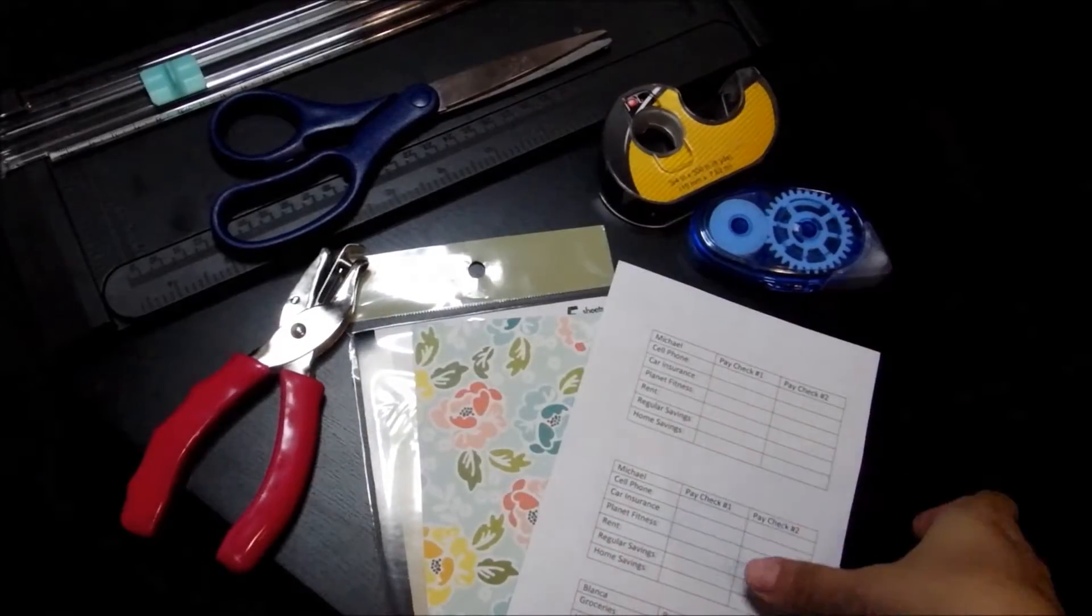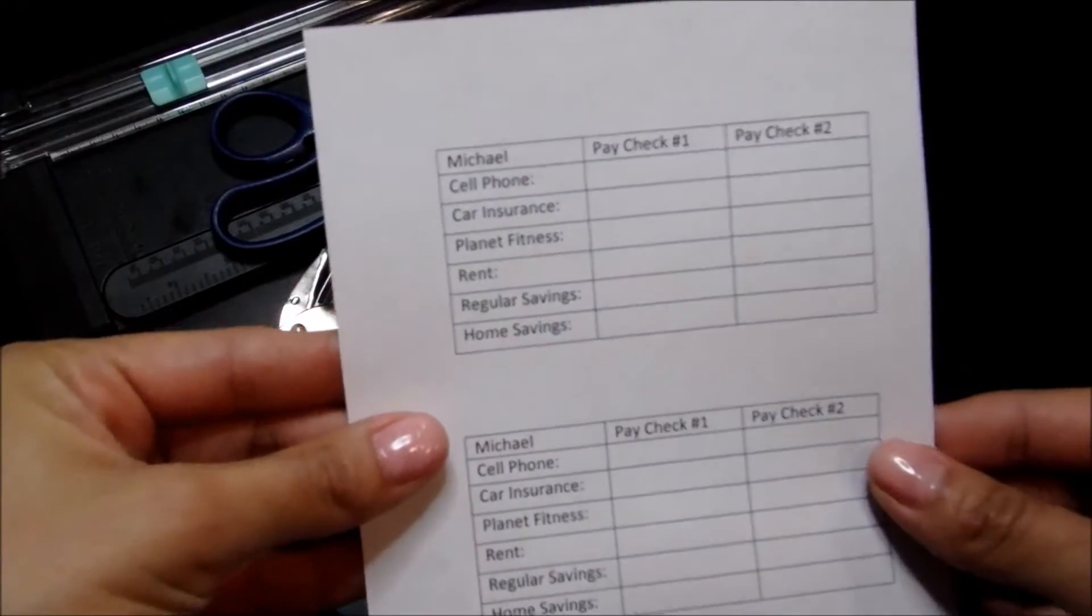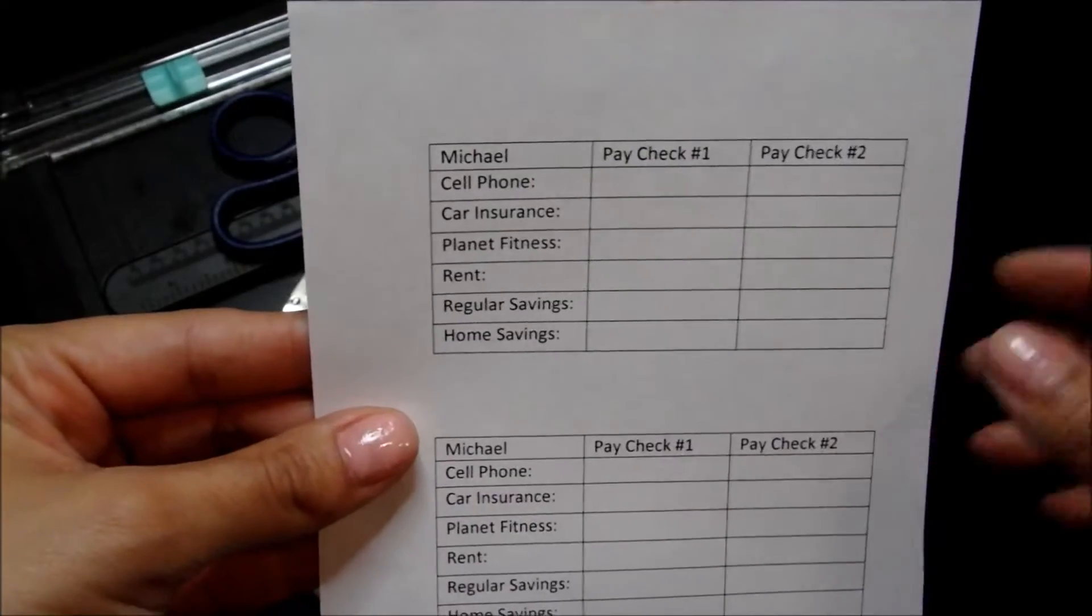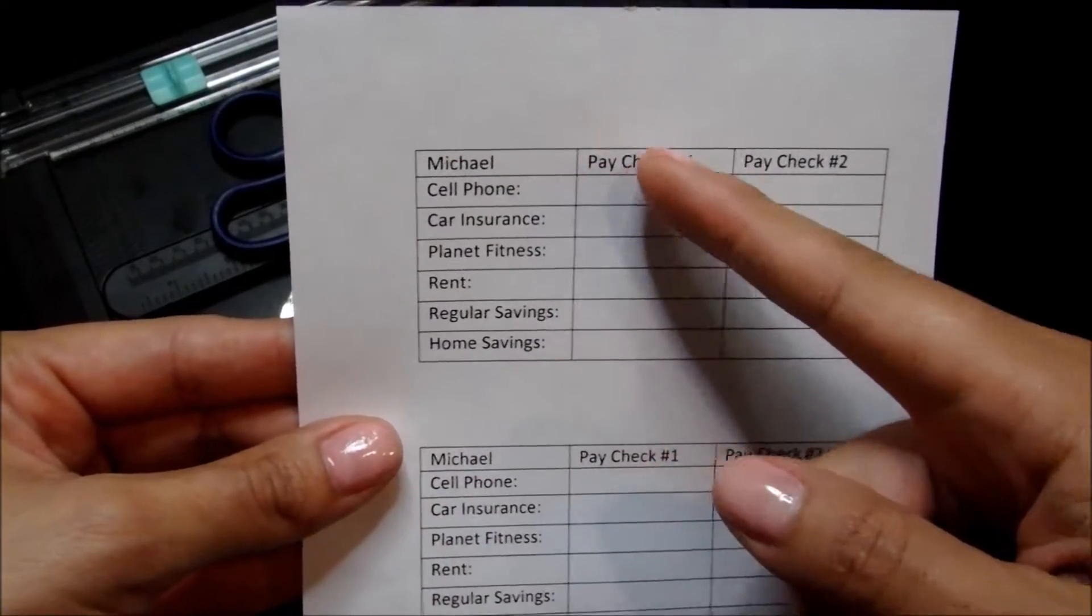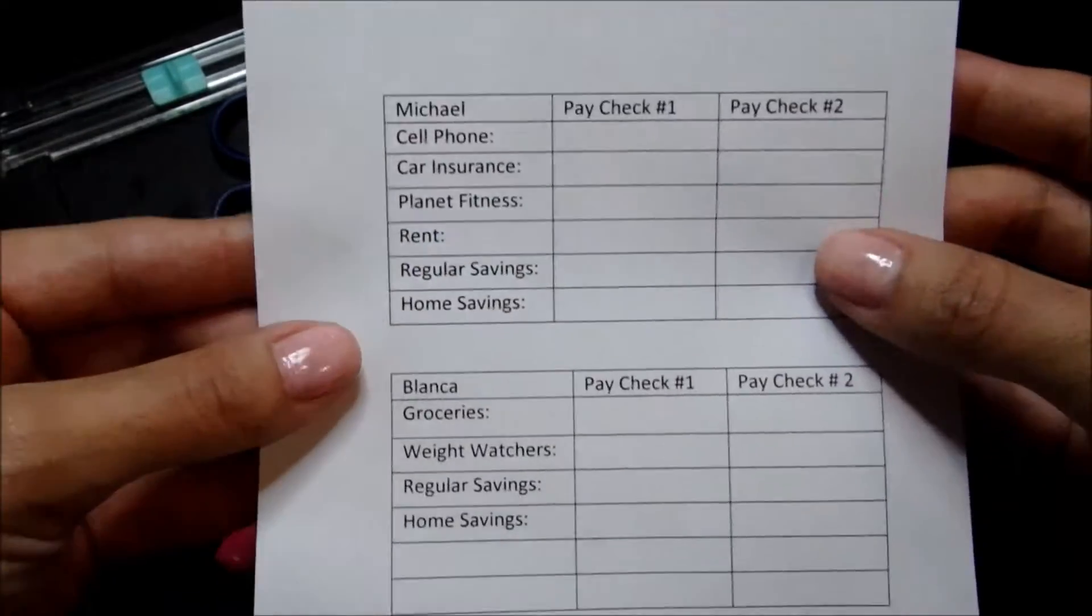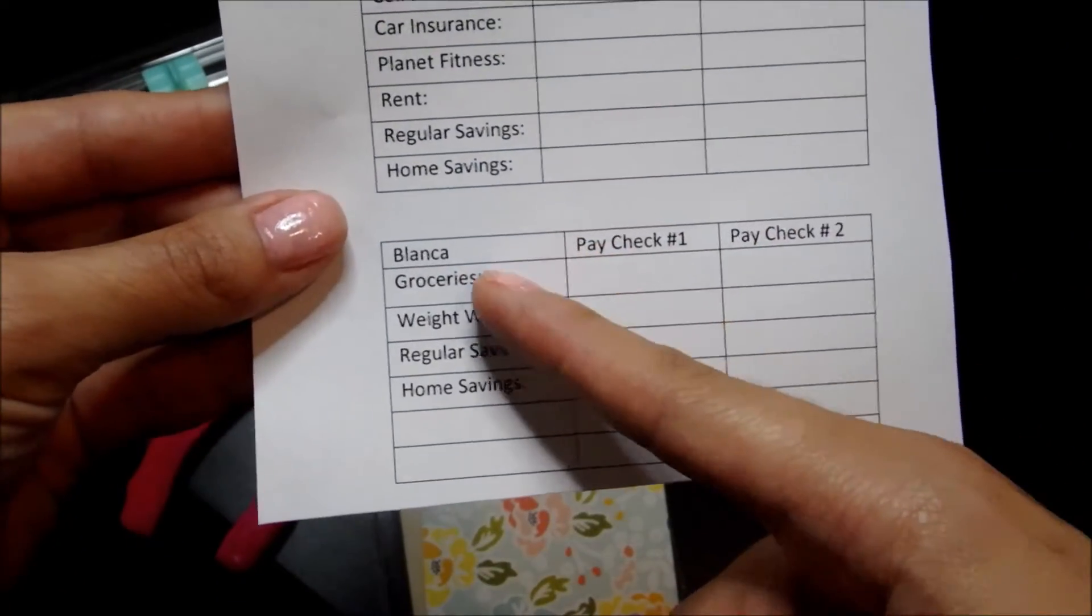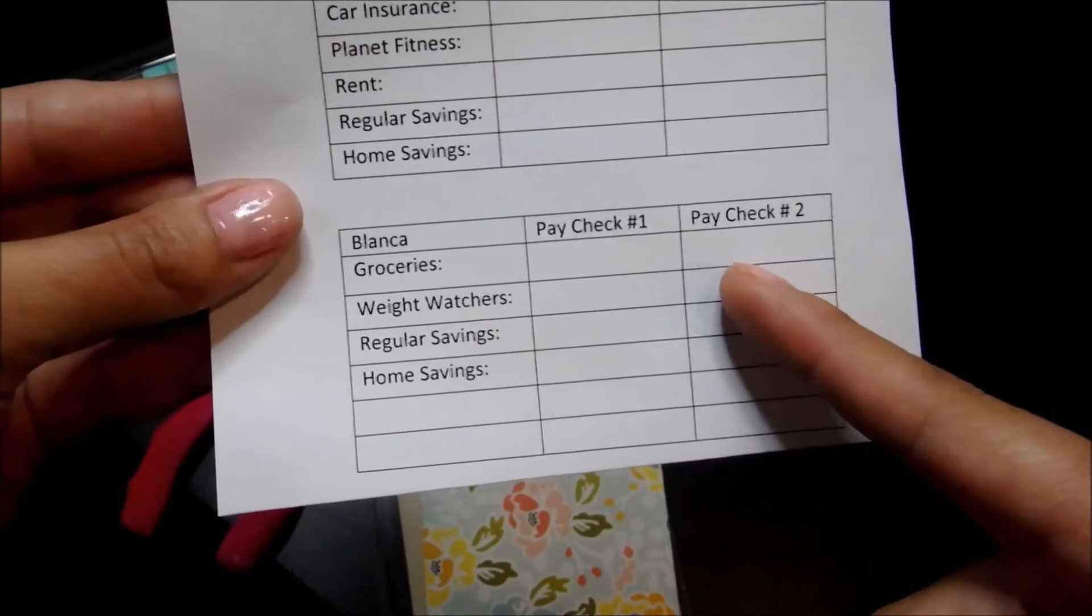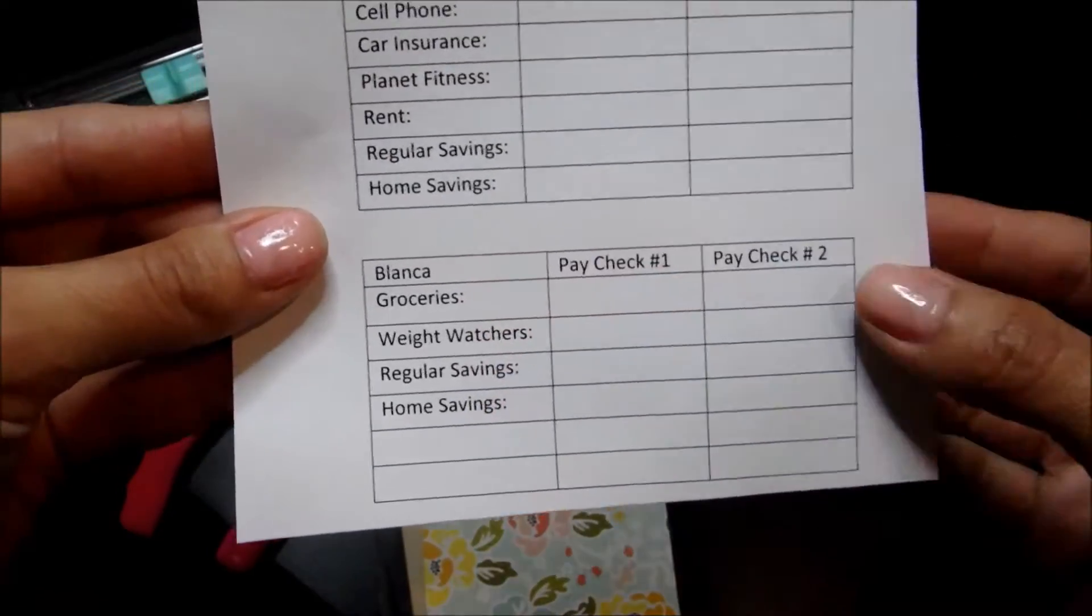Here are the materials you will need. First off, the most important thing is something like this. This is what I created so I have Michael's name right on top, check number one, check number two, and the bills that need to come out of those paychecks. And then I have also mine, which has my name on it, paycheck number one, paycheck number two, and the bills that need to come out of that.